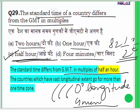Countries with a vast longitudinal extent go for more than one time zone. Such countries include Canada, the USA, and others.